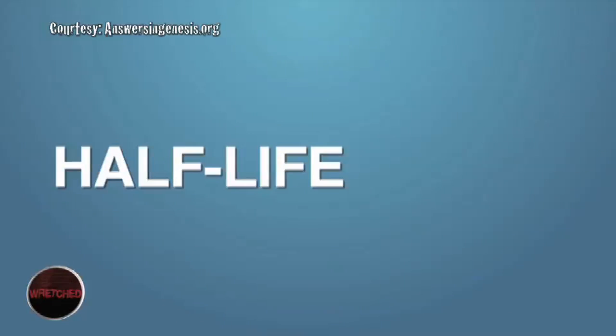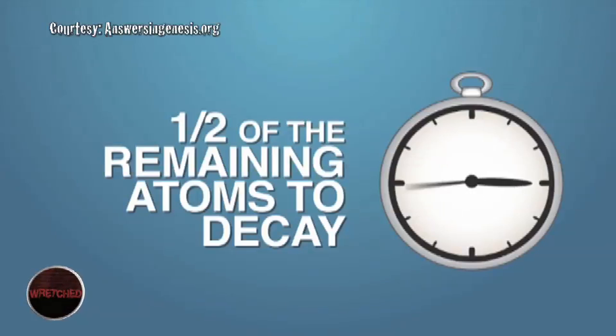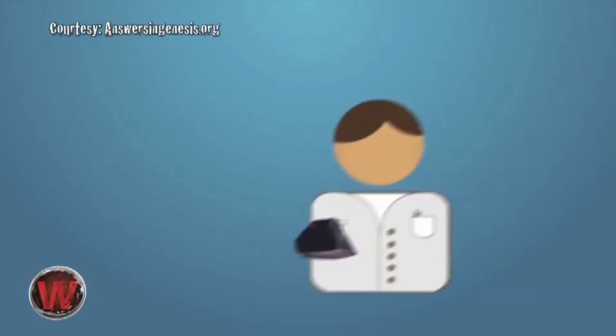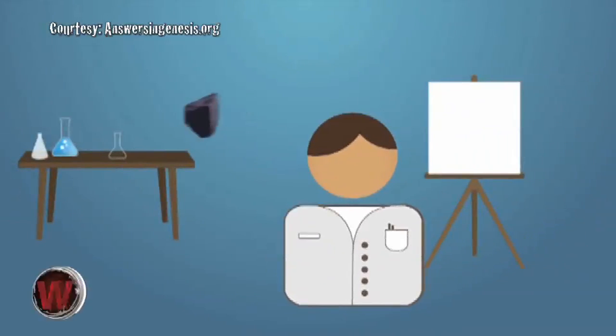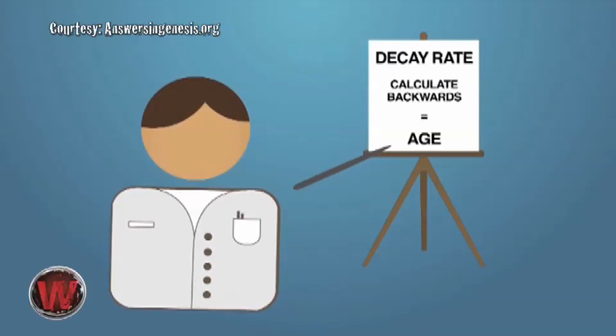The decay rate is measured in terms of half-life, that is the length of time it takes half of the remaining atoms of a radioactive parent element to decay. Of course, that can be measured in a laboratory, and it is assumed that since we know the decay rate, we can calculate backwards and come up with the age of the rock.